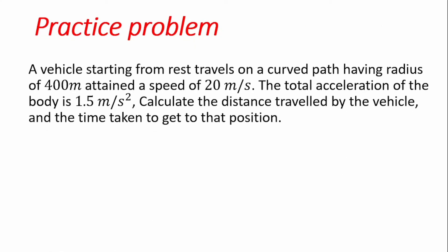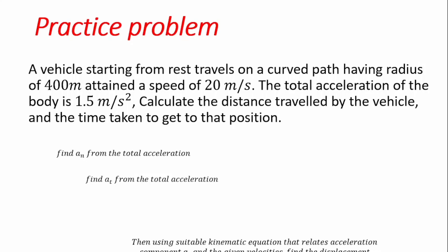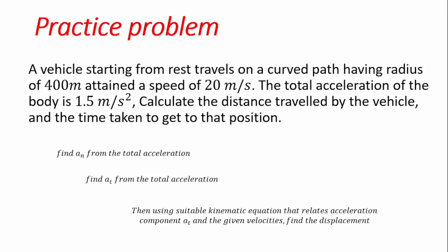We also consider a related problem. The difference from the previous one is that here we are given the total acceleration and asked to calculate the distance traveled and time taken. We follow the same procedure: find the normal component from the given velocity and radius, then subtract the normal component vectorially from the total acceleration to get the tangential component. We then use the kinematic equations relating acceleration and velocity to find displacement, and use another equation to find time.